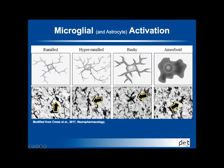Upon activation, microglia transform in shape and release signaling proteins like cytokines and chemokines. There are also different flavors of activation: a more pro-inflammatory flavor versus anti-inflammatory. Strictly speaking, these are generally not regarded as binary states, but rather on some sort of continuum.